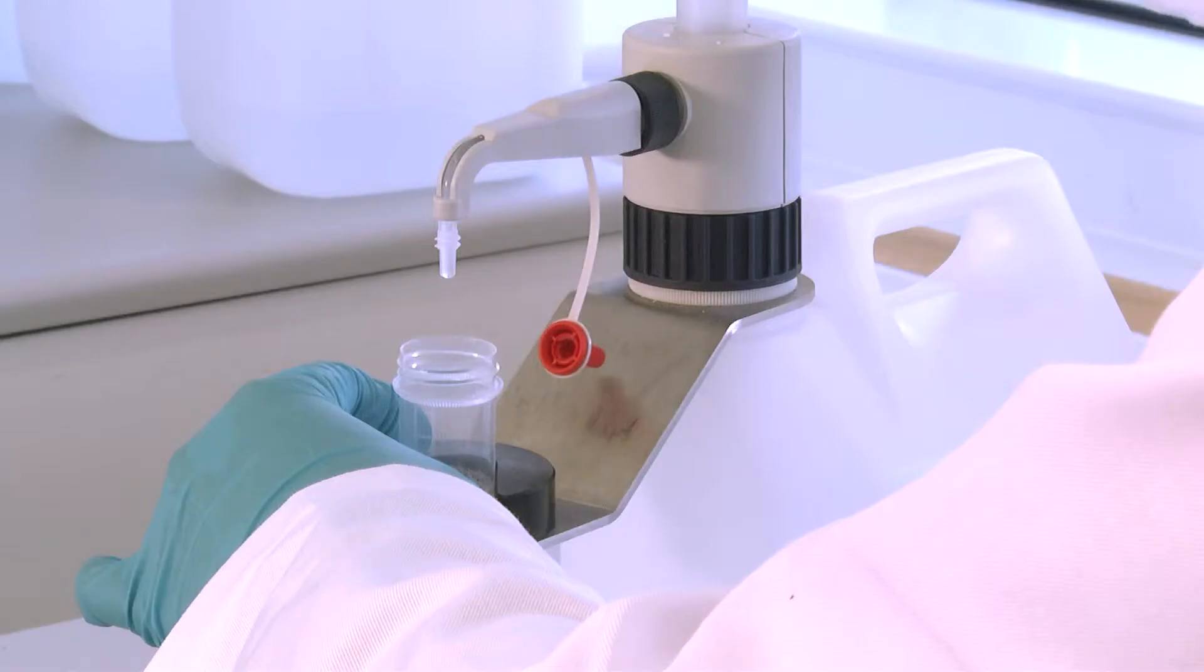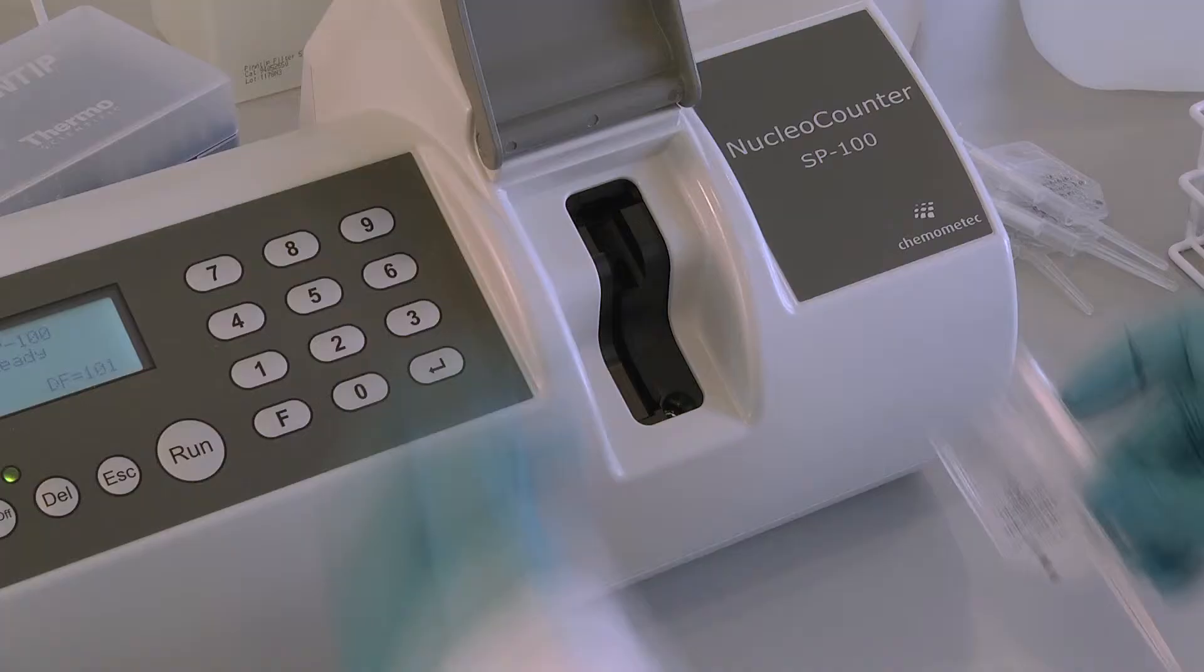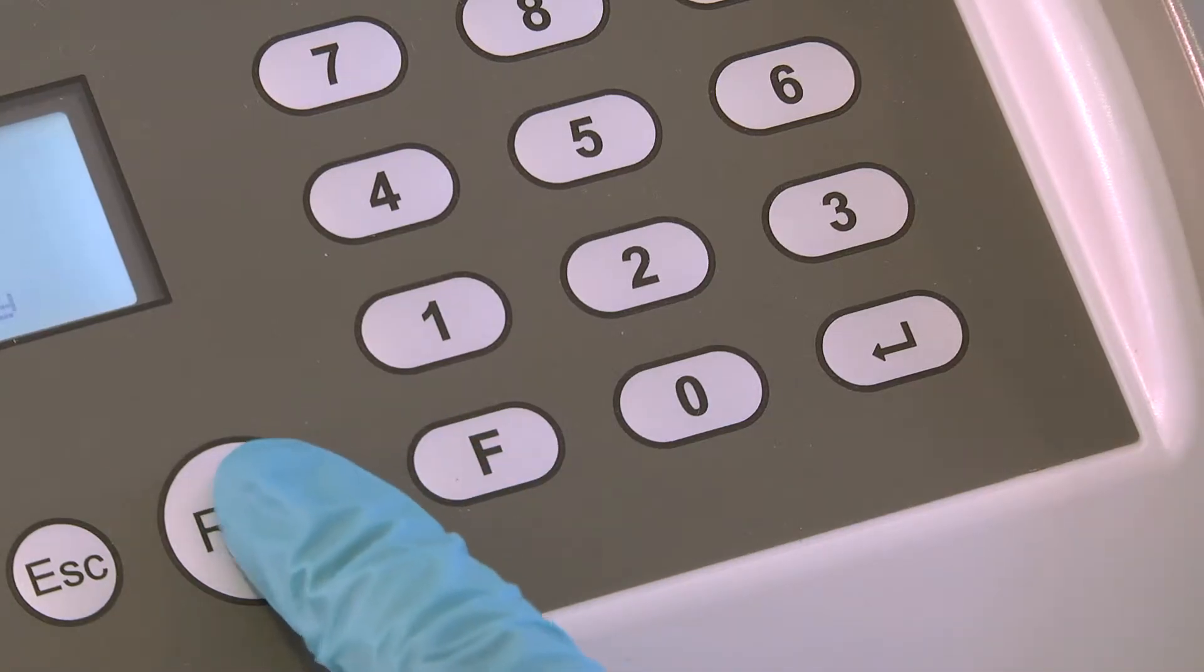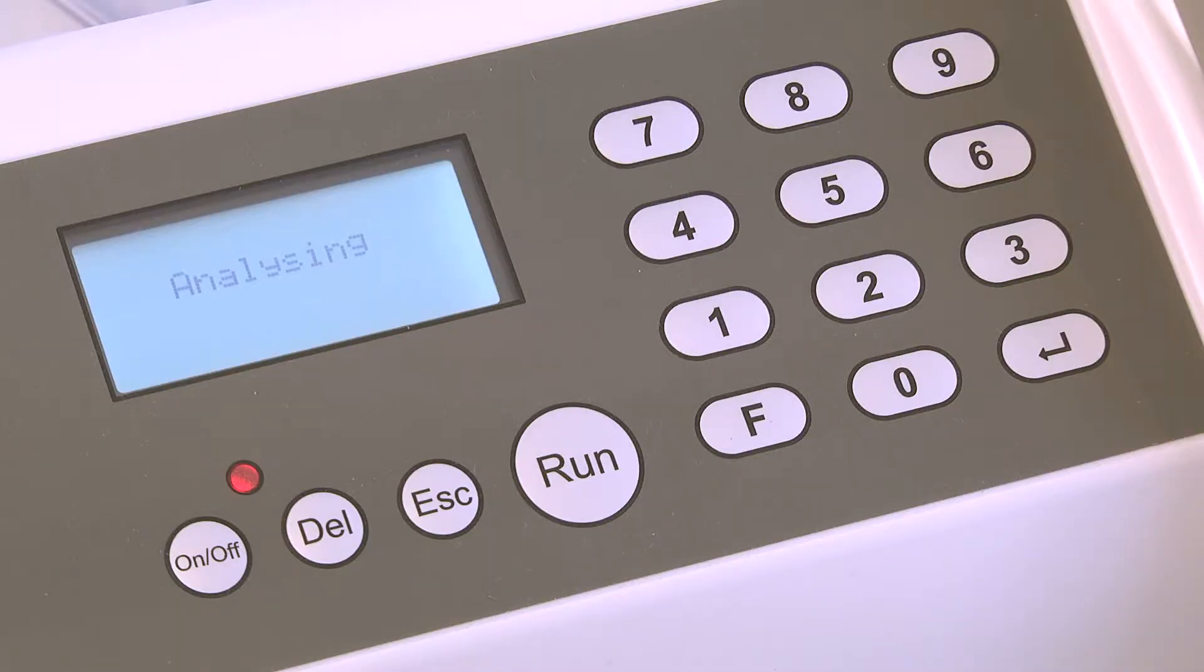To measure viability, just repeat the process with PBS. The SP100 shows the non-viable cell count and the percent viability can be calculated.